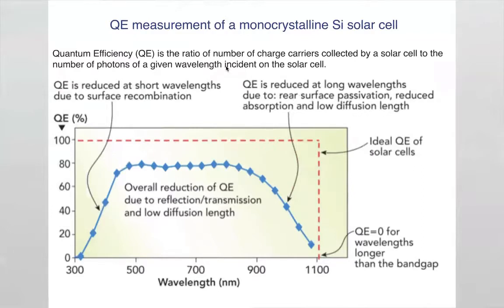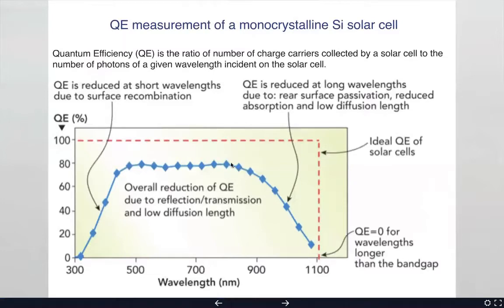Looking at a monocrystalline silicon solar cell's QE curve: QE in percent is plotted as a function of wavelength. Generally there is very low QE at very short wavelengths, increasing as wavelength increases, then a plateau, then decreasing again. For an ideal solar cell you'd want a step function — 100% for all photons above the band gap, zero below. But the ideal case doesn't happen in practice.